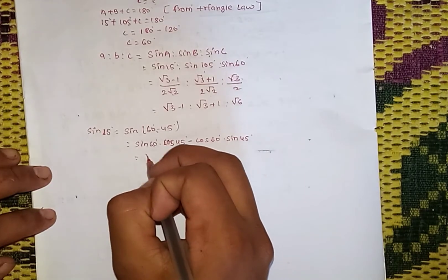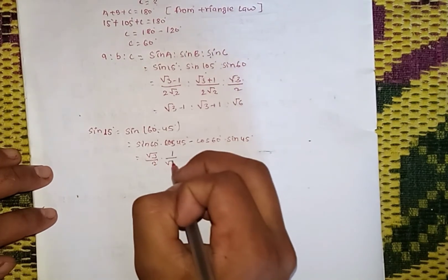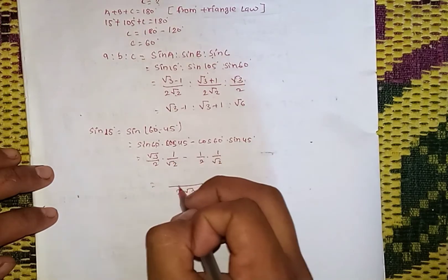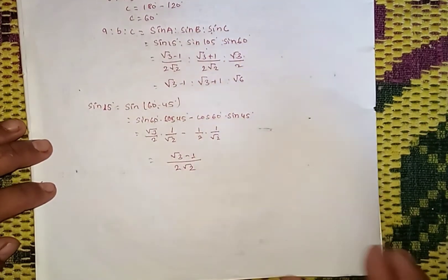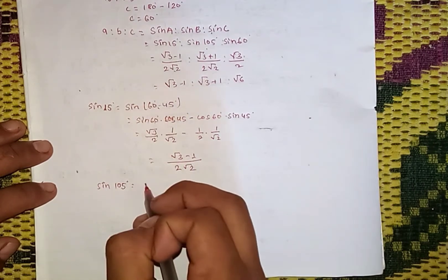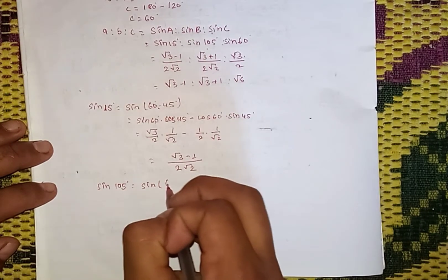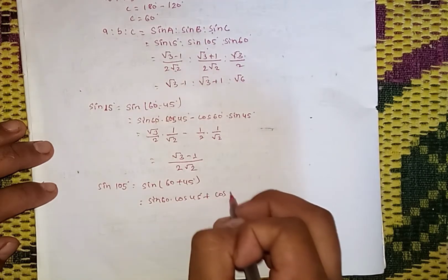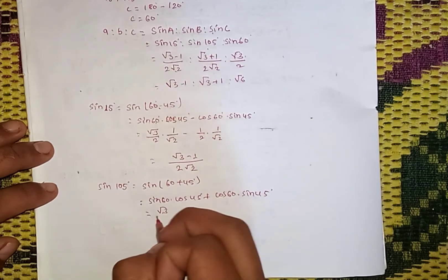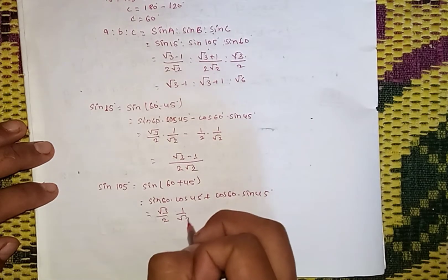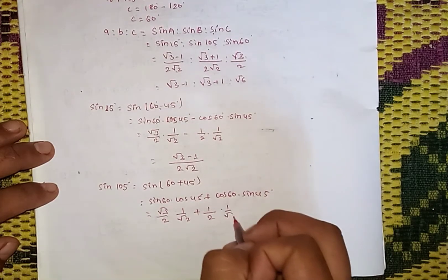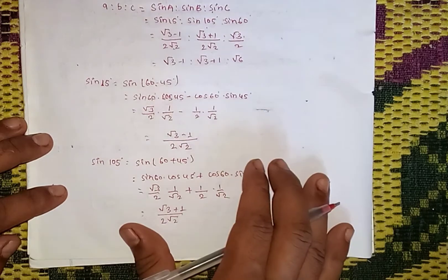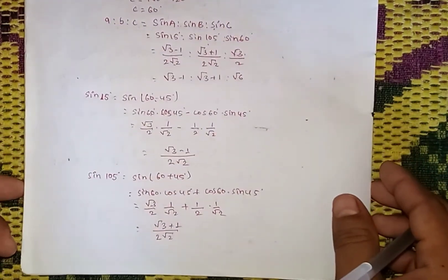Cos 45 is 1 by root 2, cos 60 is 1 by 2. So for sin 105, using sin(60 plus 45): sin 60 cos 45 plus cos 60 sin 45. Sin 60 is root 3 by 2, cos 45 is 1 by root 2, cos 60 is 1 by 2, sin 45 is 1 by root 2. So the result is root 3 plus 1.